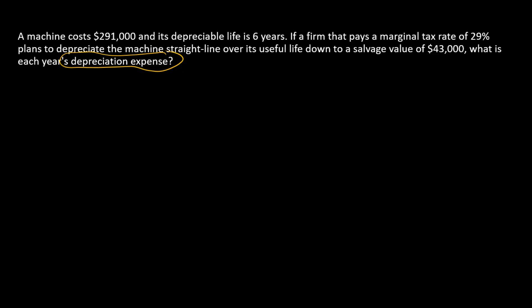In order to calculate depreciation, we need to start with a starting book value — that's going to be this $291,000, or its historical cost. Then we want to think about its expected ending book value, also called a salvage value, and that number is $43,000. So the company has an asset with an initial recorded book value of $291,000 and it's going to take it all the way down to $43,000.